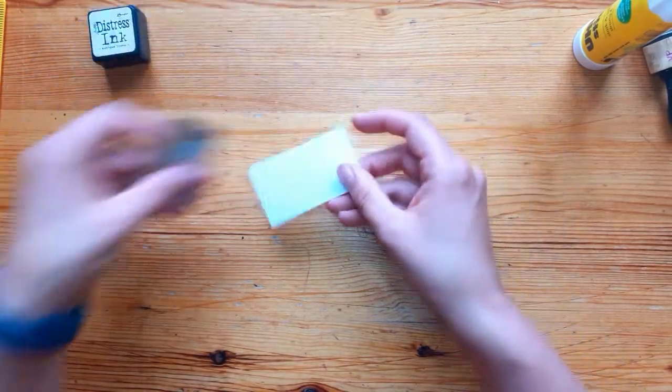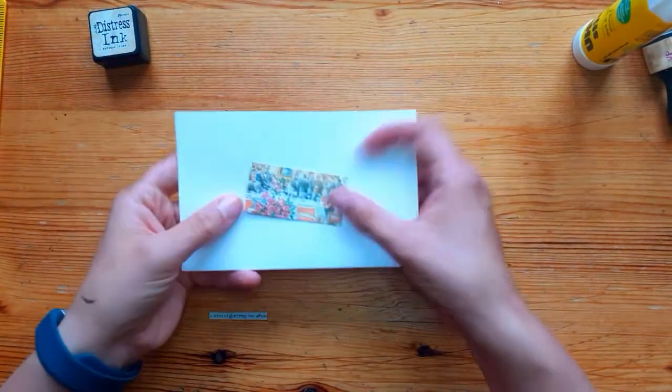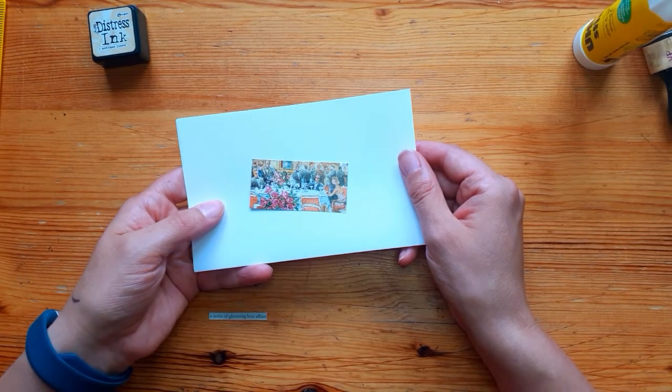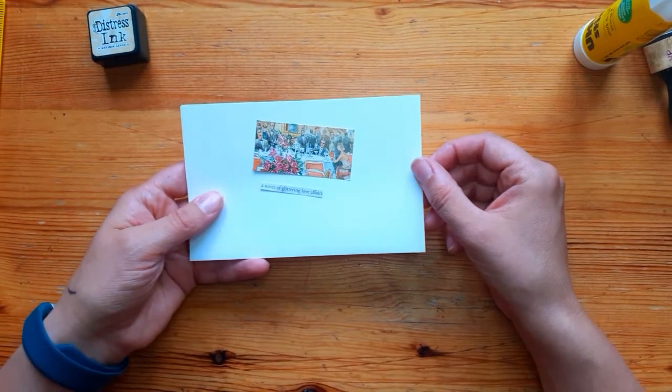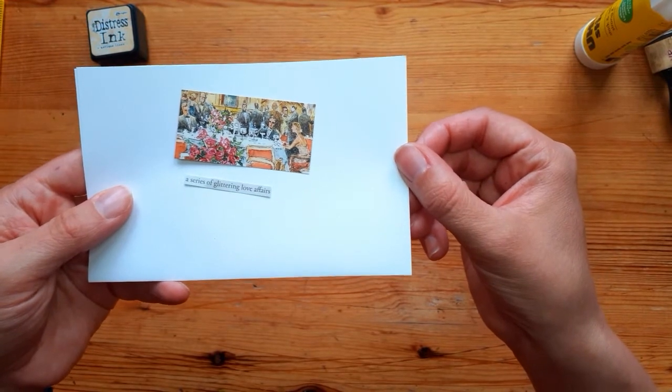So I've already pre-cut my card, I've already pre-cut my piece, and this I think was from an illustration about being on a cruise ship. And I've also picked the text I want, which is 'a series of,' I don't know if you can see that, 'a series of glittering love affairs.'